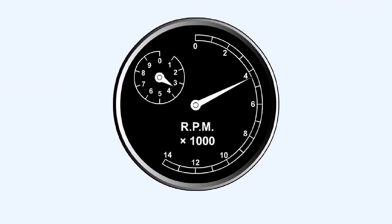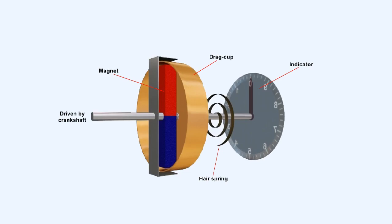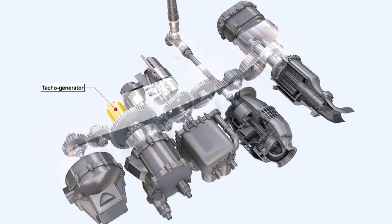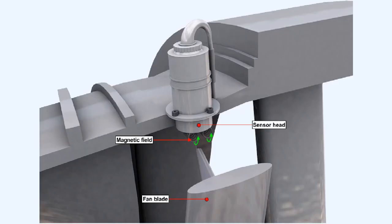The RPM indicator is called a tachometer, TACO for short. There are three methods of measuring engine rotational speeds: the mechanical magnetic tachometer, the electrical generator system or tachogenerator, and the inductive probe system.